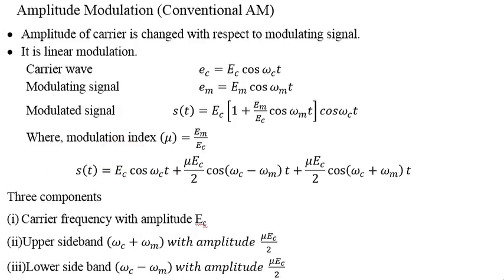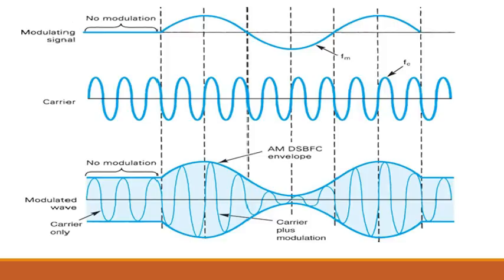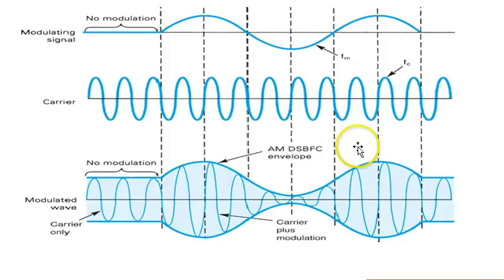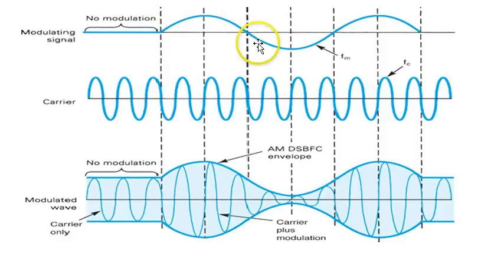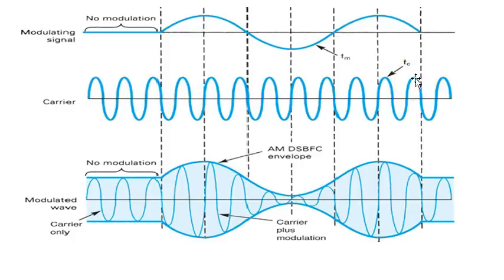Graphically, we can see how modulation takes place. The modulating signal is sinusoidal at frequency Fm with lower frequency, while the carrier signal has a higher frequency Fc. When modulation takes place, you get the modulated wave — the envelope of the modulated signal follows the modulating waveform.